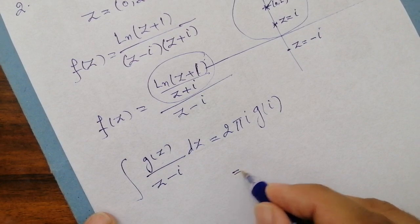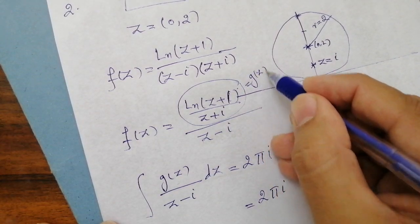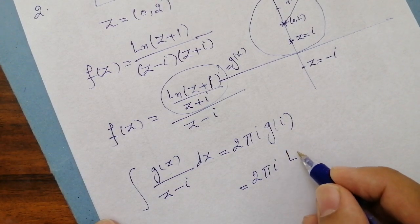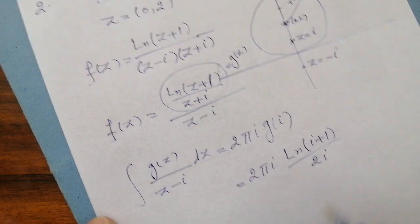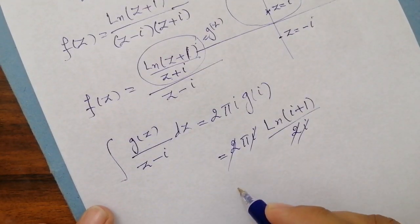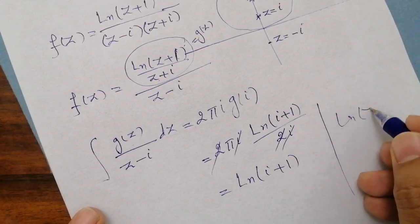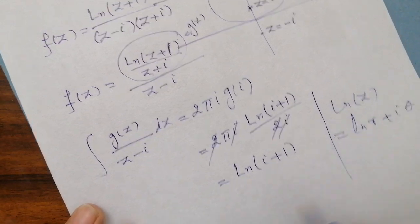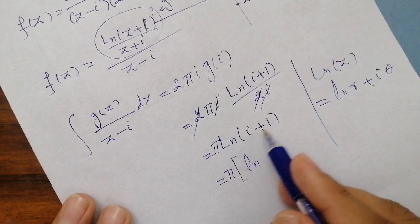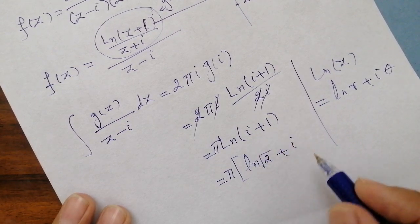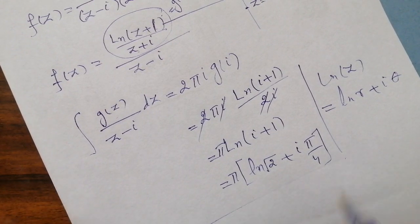Substituting z₀ = i, we get 2πi · g(i) = 2πi · [log(i+1)/(i+i)] = 2πi · [log(1+i)/(2i)]. The 2 and i cancel, leaving π · log(1+i). Using log(z) = log|r| + iθ, where r = √2 and θ = tan⁻¹(1) = π/4, we can simplify further: the result is π[log√2 + iπ/4]. This is the required solution.